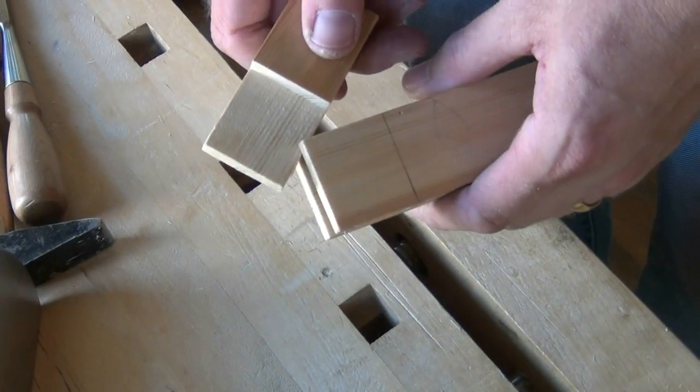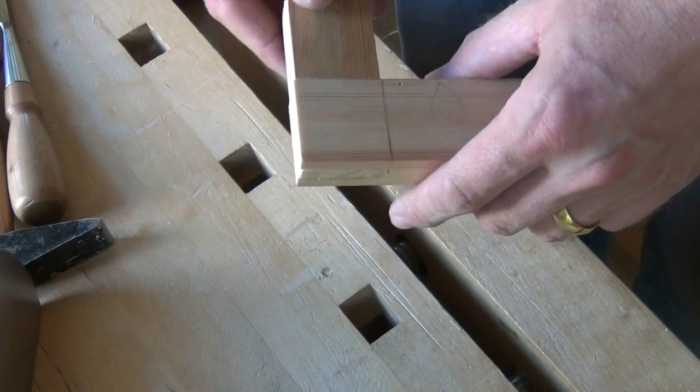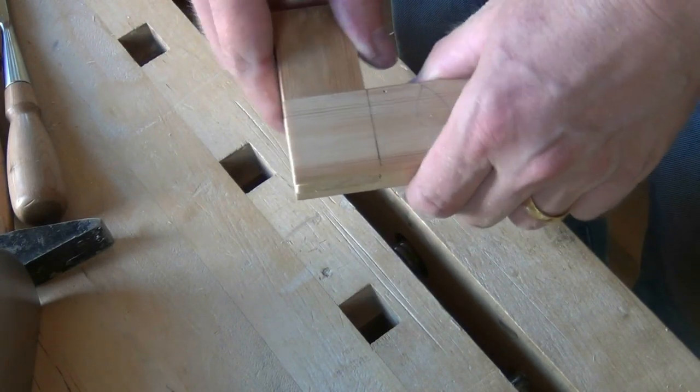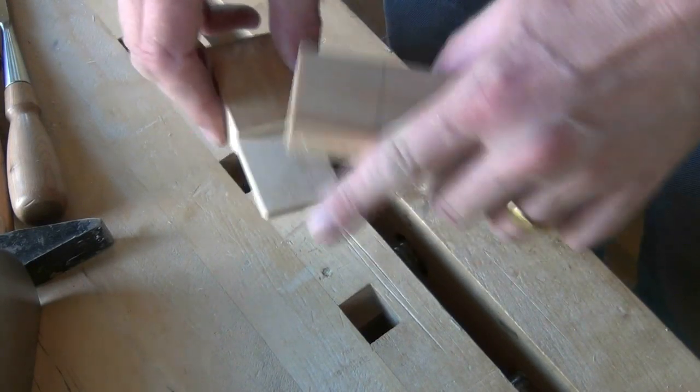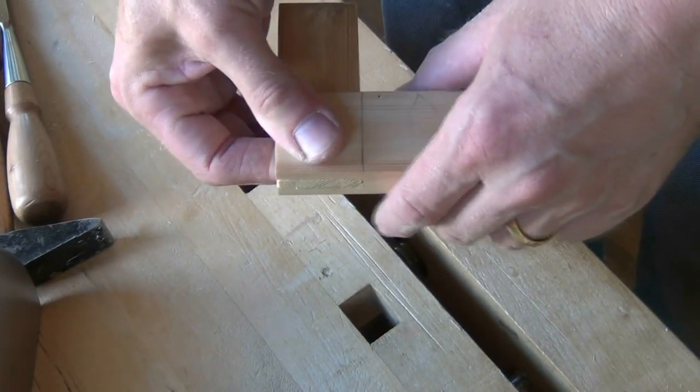Pretty soon your pieces will go together relatively easily, but snug enough so they don't fall apart. And that's the time when you need to apply glue to the inside faces of the mortise and on the tenon. Put them together and clamp across the faces.